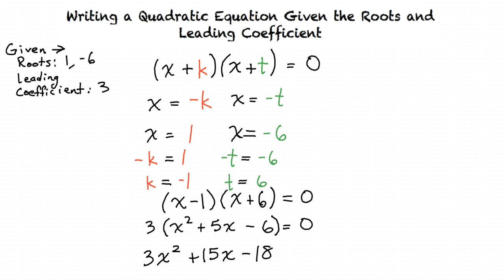Therefore, our quadratic equation is 3x² + 15x - 18 = 0.